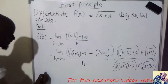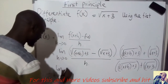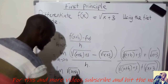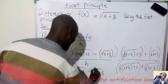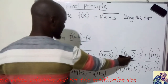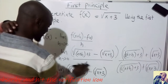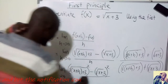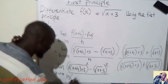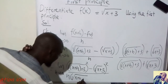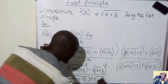Applying the difference of two squares on the numerator, we square each term. The denominator becomes h multiplied by [√(x + h + 3) + √(x + 3)]. On the numerator, squaring the square roots removes them, giving (x + h + 3) minus (x + 3). We leave the denominator as is — expanding it would be too complicated to manipulate.